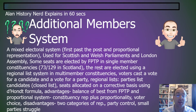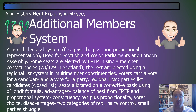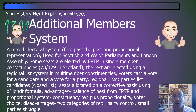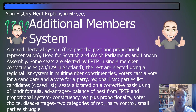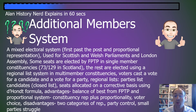The Additional Member System is a mixed electoral system using elements of first past the post and proportional representation. It is used in the Scottish and Welsh parliaments and the London Assembly. Some seats are elected on first past the post in single member constituencies — 73 of the 129 in Scotland — while the rest are elected using a regional list system in multi-member constituencies.